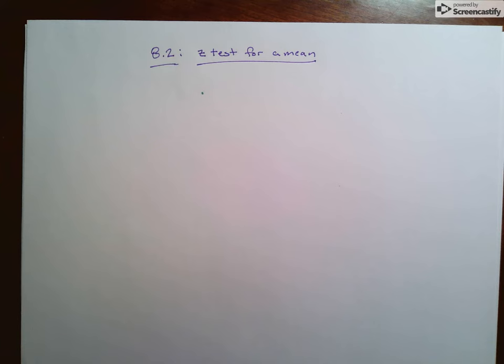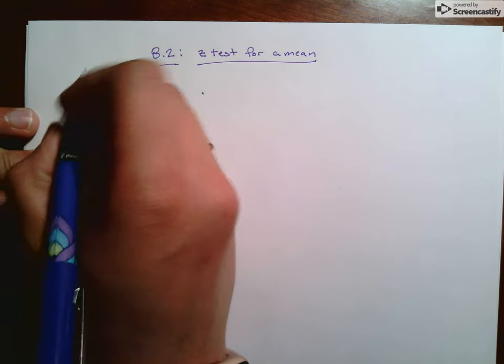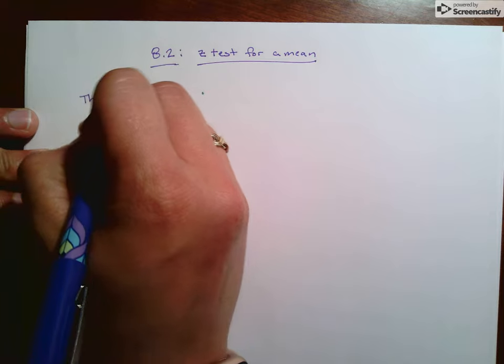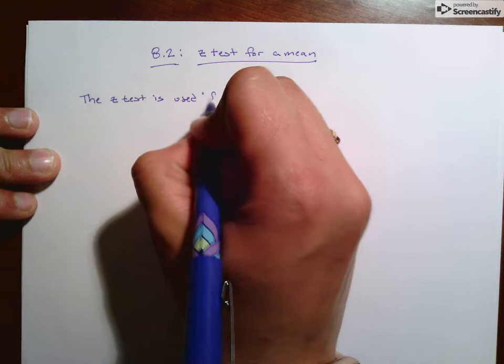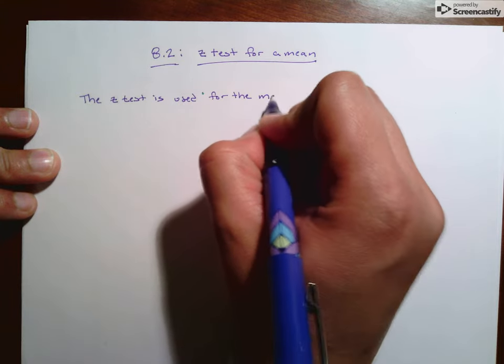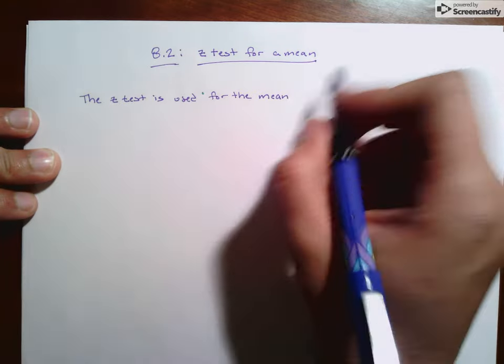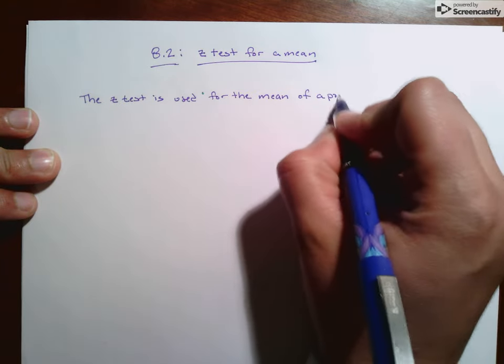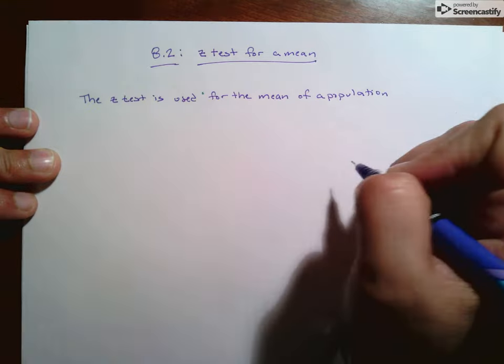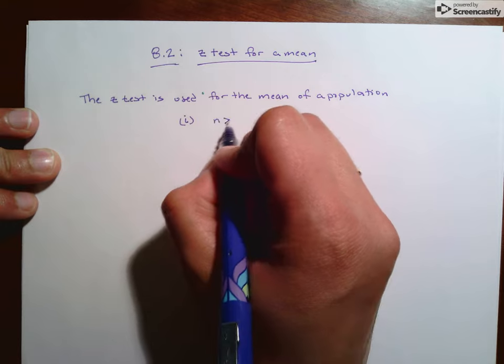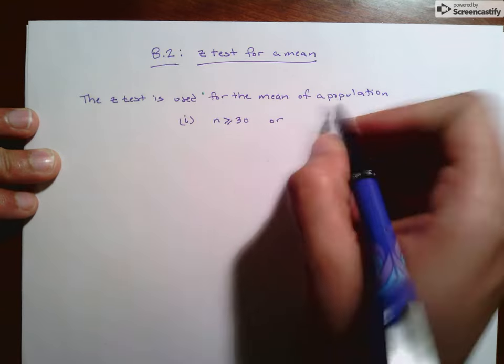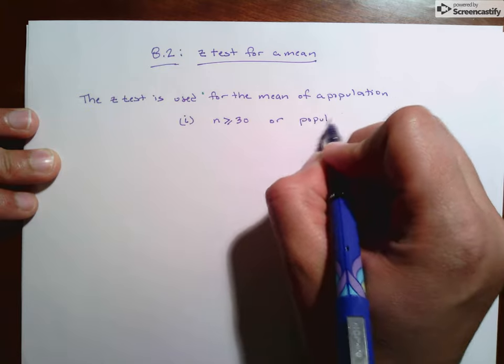So a z-test is a hypothesis test, and we're going to use a z-test statistic. The z-test is used for the mean of a population. It can be used when either n is greater than or equal to 30, or our population is normally distributed.